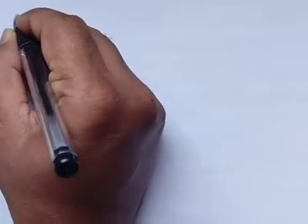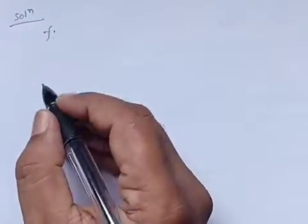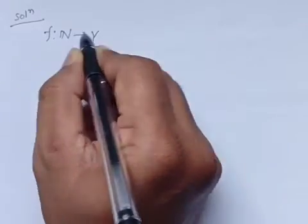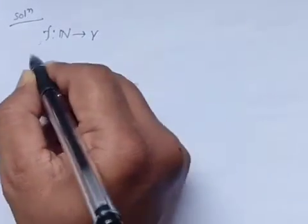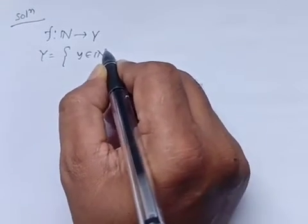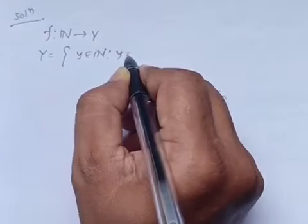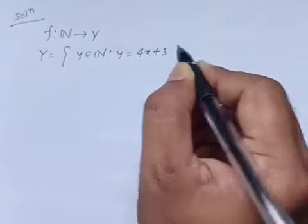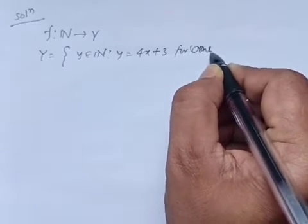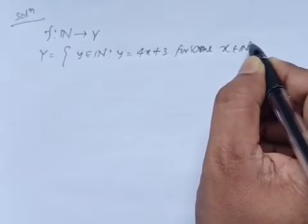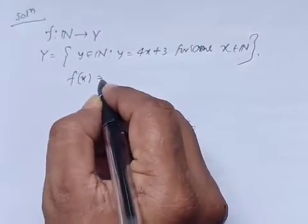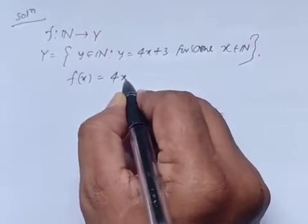F is a mapping from N to Y. N is the set of natural numbers, and Y is defined as {y ∈ N : y = 4x + 3 for some x ∈ N}. So Y is well-defined, and the function rule is 4x + 3. For any x which is a natural number, the corresponding y is an element of Y, so this is a well-defined function.